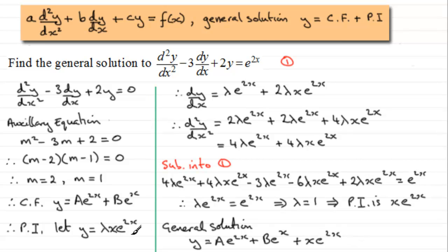I hope that's given you an idea of how to handle this special case. Just take care to check that your particular integral is not one of the terms in your complementary function. If it is, you need to multiply the lambda e to the 2x that you would normally take by x.